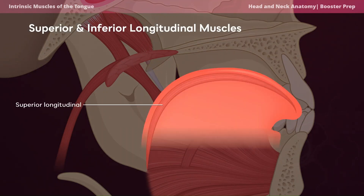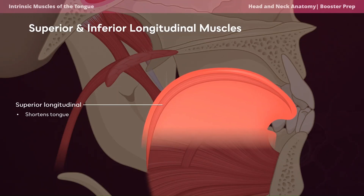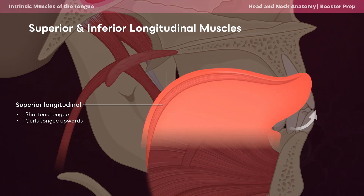The superior and inferior longitudinal muscles both shorten the tongue, meaning they pull it inwards. The superior longitudinal muscles are oriented longitudinally and run in an anterior to posterior fashion. This anterior to posterior orientation explains why the superior longitudinal muscles curl the tongue upwards.